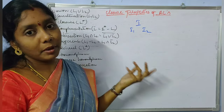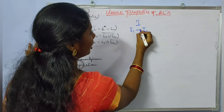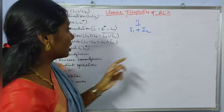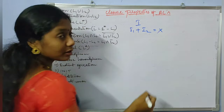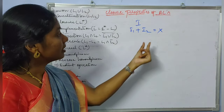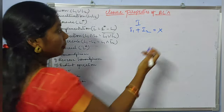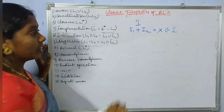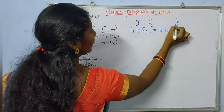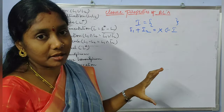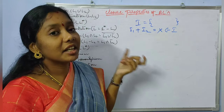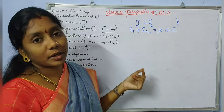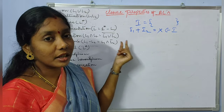I will perform some operation on those two integers and get some resultant value. If the resultant value also belongs to the integer set, then the set is closed under that operation. The set of all integers is closed under the plus operator.